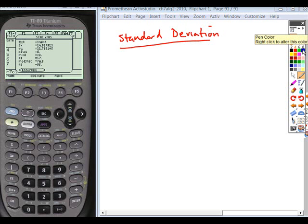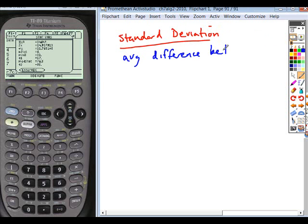So the standard deviation is the average distance or difference between the mean and each entry.